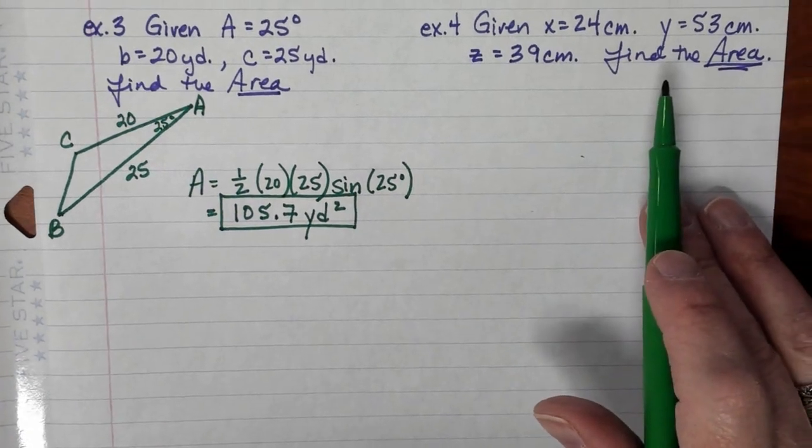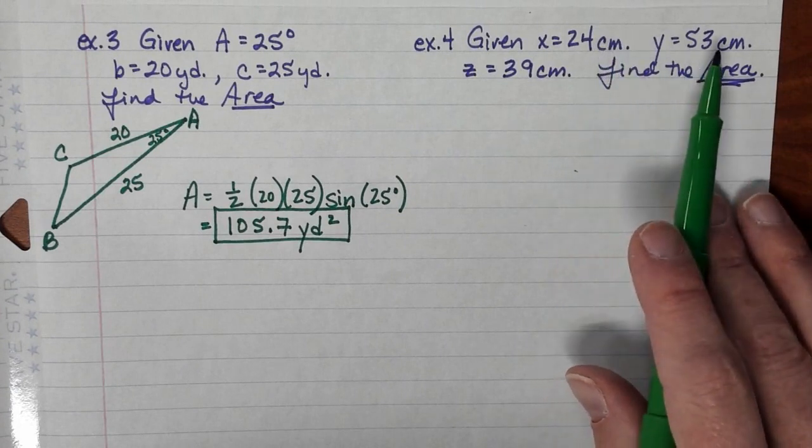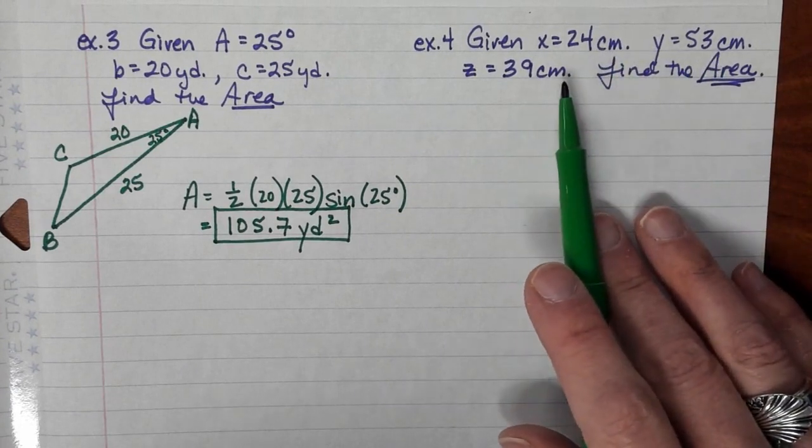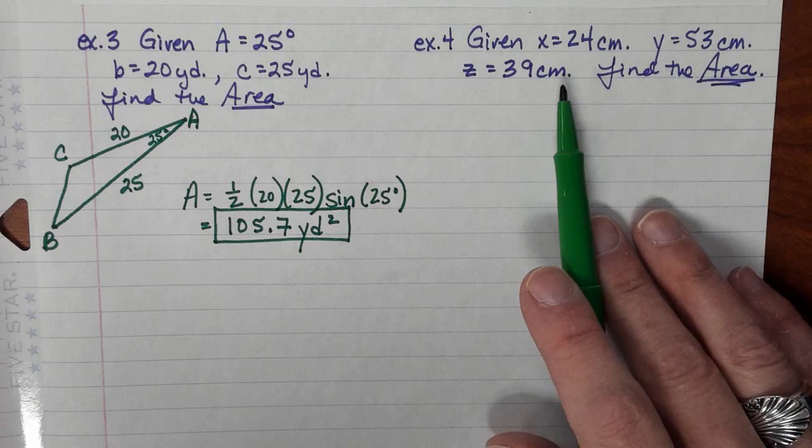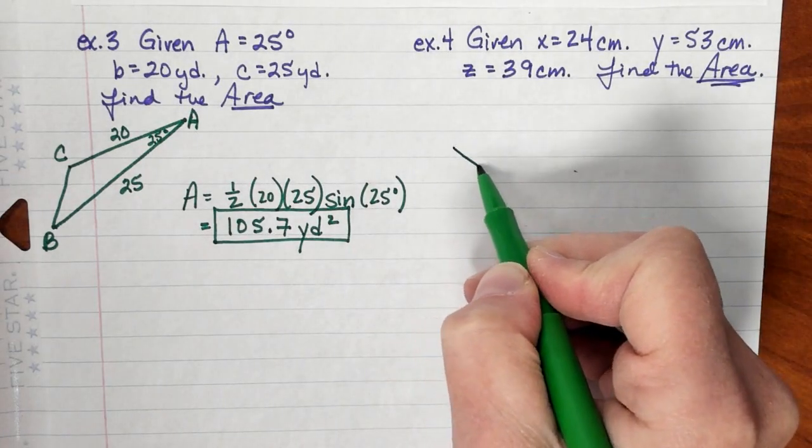Let's say you have a triangle where you are given the three sides: 24 centimeters, 53 centimeters, and 39 centimeters, and you want to find the area. Don't necessarily need a visual, but we'll do one here.